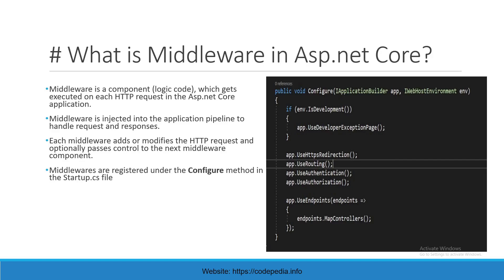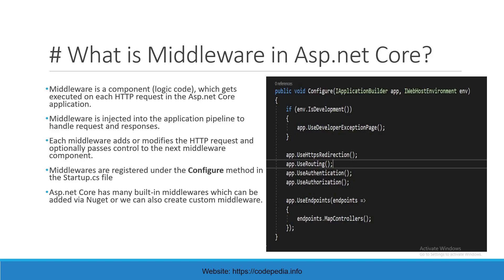Middleware are registered under the Configure method in the Startup.cs file. As you can see here, we have a Configure method and we have some built-in middleware. ASP.NET Core has many built-in middleware which can be added via NuGet package, or we can also create custom middleware. All these are built-in middleware — for example, app.UseAuthentication and app.UseAuthorization.